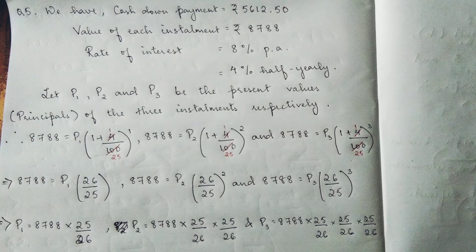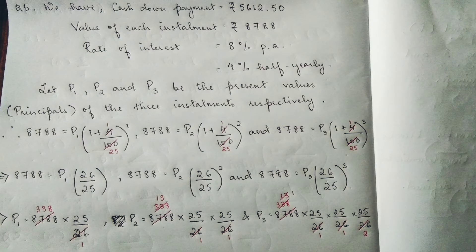It will become the reciprocal. After this, you will solve what you have. 8788 can be divided by 26, it becomes 338.